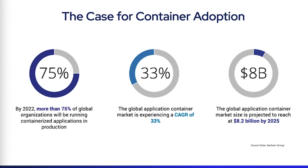According to Gartner research, within a couple of years more than 75% of all global enterprise organizations are going to be running containers in production for their applications — in some form, whether that's one application or many. One of the big reasons containers have taken hold is the concept of server sprawl. Ten or fifteen years ago we had server sprawl, then as we moved into virtualization that led to VM sprawl. Without the right processes, technologies, and governance, that can lead to extra effort keeping systems up to date and potential security vulnerabilities.